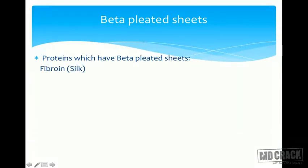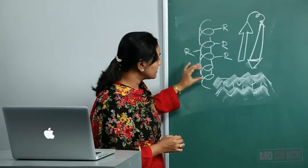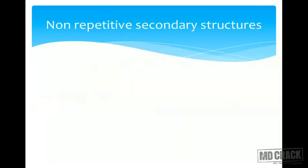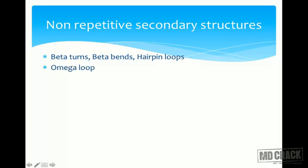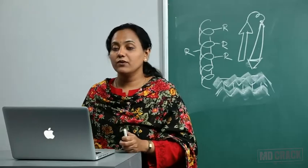Proteins that have beta pleated sheets include silk protein fibroin, flavodoxin, and carbonic anhydrase. An important beta pleated sheet protein is amyloid protein, which accumulates in amyloidosis and Alzheimer's disease. The secondary structure also includes non-repetitive elements such as beta bends, beta turns, hairpin loops, and omega loops, though these are less critical for exam purposes.